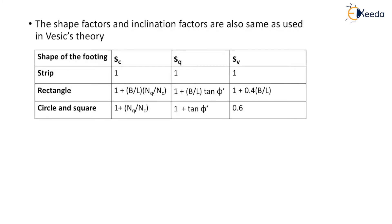The shape factors and inclination factors are the same as those used in basic theory. The value of sc, sq, and sγ for strip footing is 1. For rectangular footing, sc = 1 + (B/L)·(Nq/Nc), and sq = 1 + (B/L)·tan φ'. For circular or square footing, sc = 1 + Nq/Nc, and sq = 0.6.